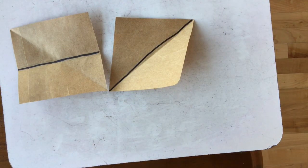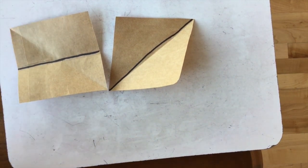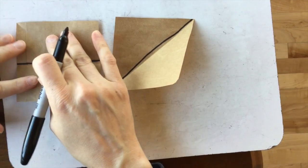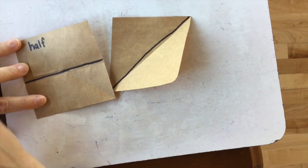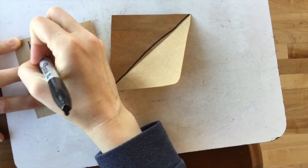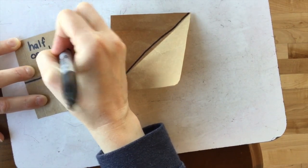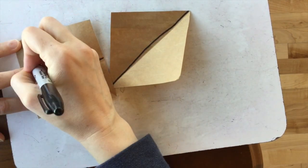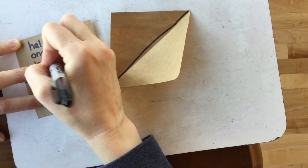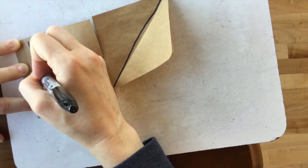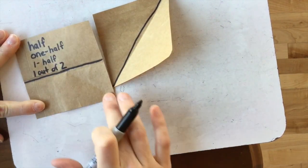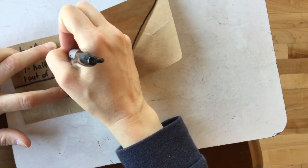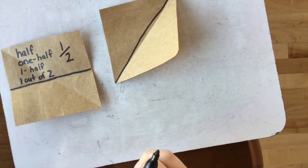Now, what are the names for these pieces, these equal shares? Well, one of these equal shares would be called a half. You could also write it like one half. You could write it one out of two, because it's one piece out of two. Or you could write it one over two, one half.